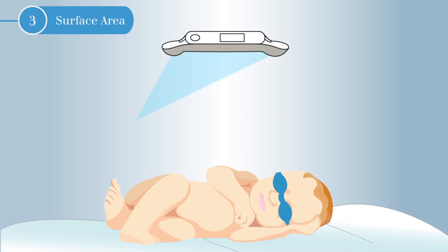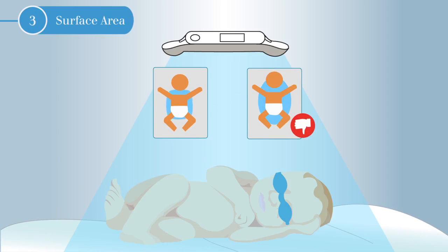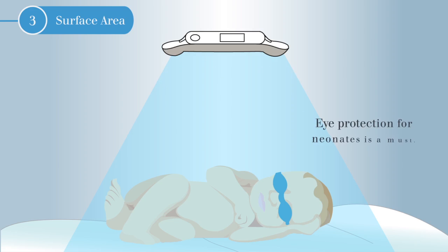For the third consideration, let's look at surface area. This means exposing as much of the neonate skin as possible to phototherapy. Widespread coverage increases the speed of bilirubin clearance in relation to bilirubin production. To protect against retinal damage, eye protection for the neonates is a must, and clothing should be minimal.